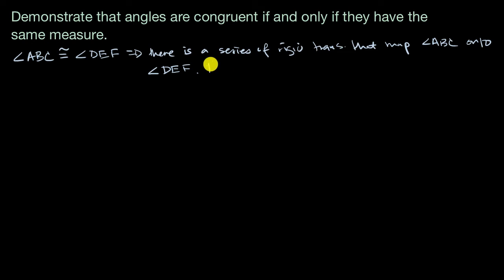By definition of rigid transformations, they preserve angle measure. So if you're able to map the left angle onto the right angle, and in doing so you did it with transformations that preserved angle measure, they must now have the same angle measure.